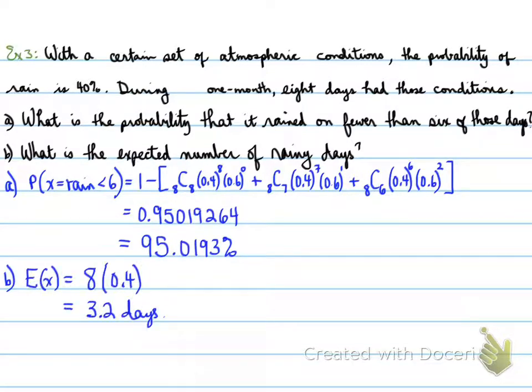What is the probability that it rained on fewer than 6 of those days? 95.0193%. Now, what is the expected number of rainy days? The expected number of rainy days is 8 days times 0.4, so x times P(x), and that gives you 3.2 days.